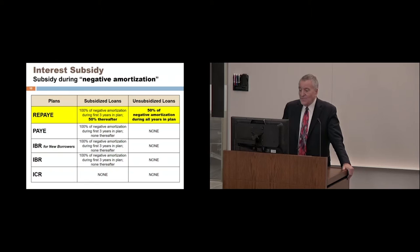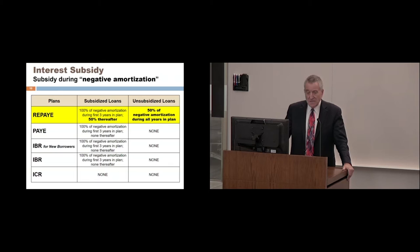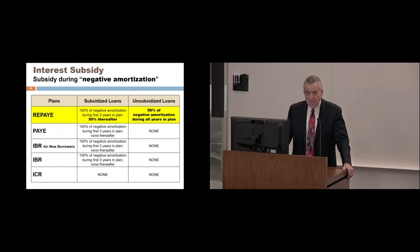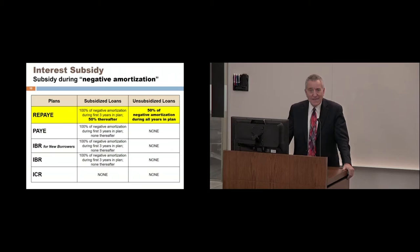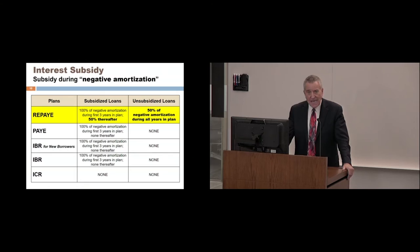The bigger issue is unsubsidized loans, since most law students only have unsubsidized direct student loans — the unsubsidized Stafford loan and the Grad Plus loan, which is also unsubsidized. For unsubsidized loans, the only payment plan offering any subsidy benefit during negative amortization is REPAYE, which subsidizes 50% of the unpaid interest. That means your debt grows only half as fast — a significant benefit. In the other income-driven plans — PAYE, IBR for New Borrowers, original IBR, and ICR — there is never any subsidy benefit on unsubsidized Stafford or Grad Plus loans. So REPAYE offers a greater potential subsidy benefit during periods of negative amortization, starting from the very first month that negative amortization exists.